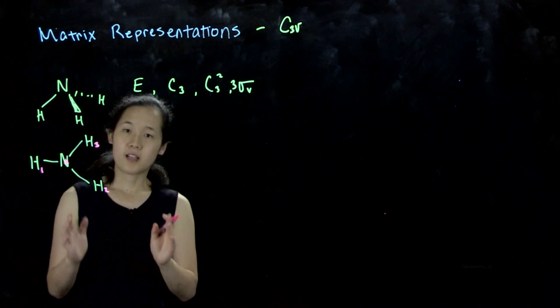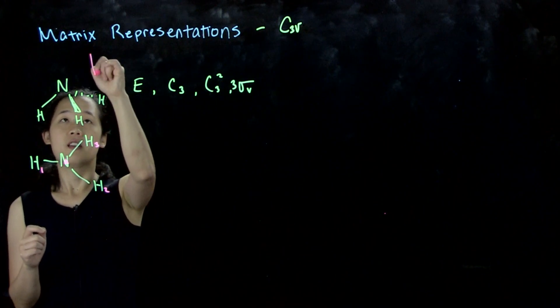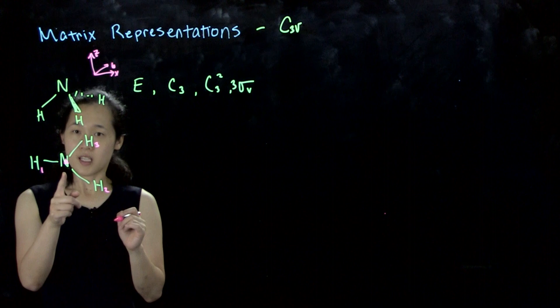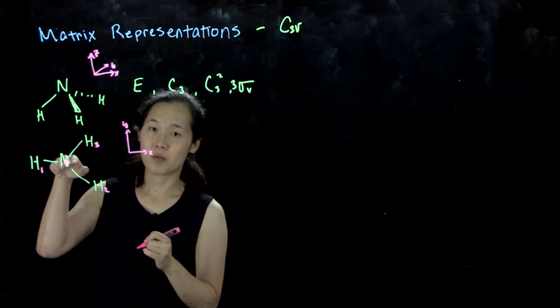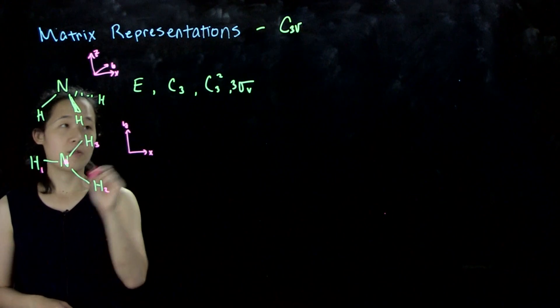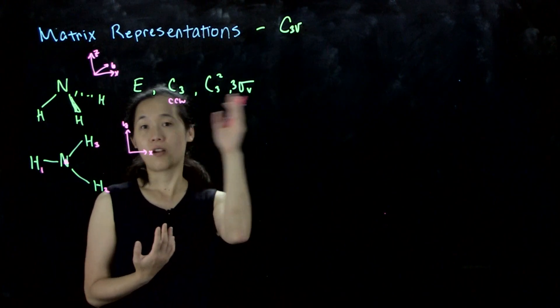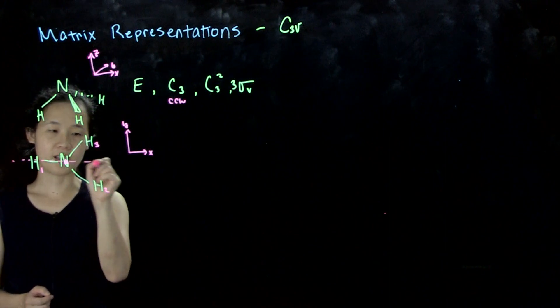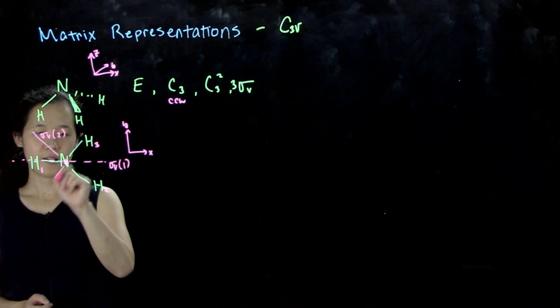We must define a clear coordinate system that we'll use throughout this exercise. For the purposes of this exercise I'm going to call this Z, X, and Y. There's our C3 and C3 will be counterclockwise just for consistency's sake. Be very consistent when you define your directions otherwise your matrices aren't going to work out. Let's call this sigma v1, this will be sigma v2 and this will be sigma v3.